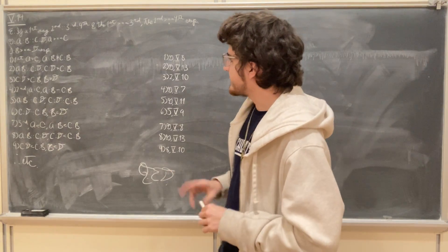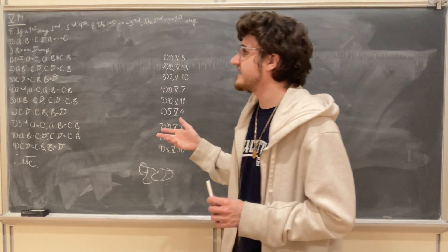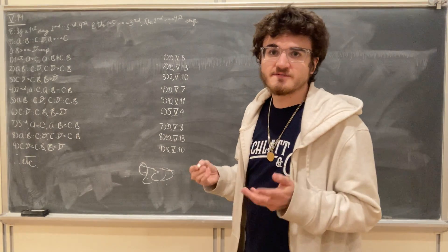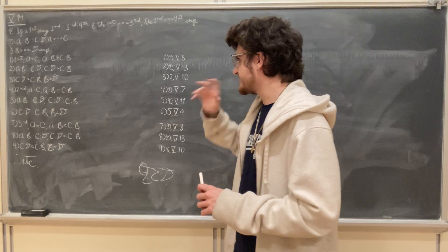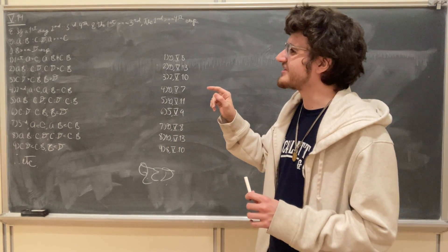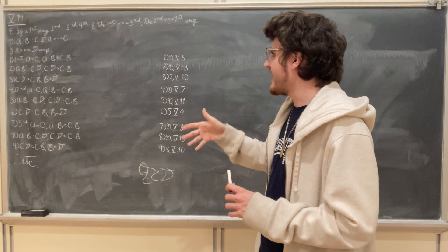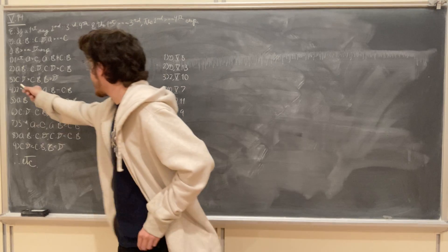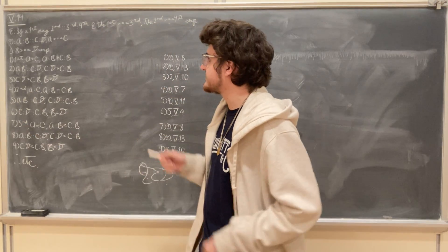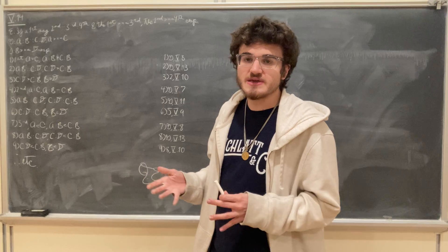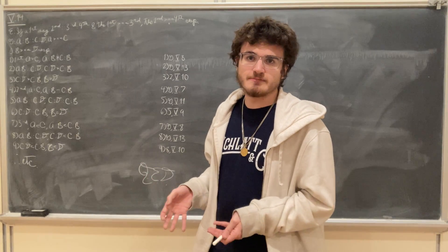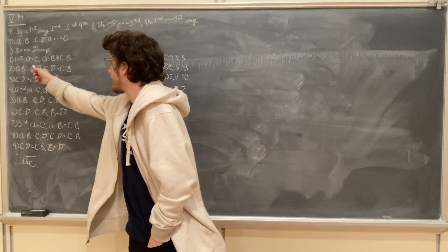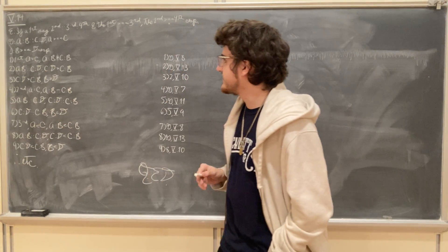Now, because c has to d a greater ratio than c has to b, we know by Proposition 5.10 that the magnitude to which the same has the greater ratio is the lesser — and so if c has to d a greater ratio than c has to b, we know d is going to be less than b. And if d be less than b, then b is obviously greater than d, and so we've proved what we set out to do. Given that a is greater than c, we have found that b is greater than d.